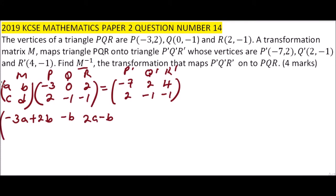Come to the second row, we get C times -3, that is -3C + 2D. Then C times 0 is 0, D times -1, this is -D. Then we have C times 2, that's 2C minus D. This is equal to the matrix (-7, 2, 4) and (2, -1, -1).